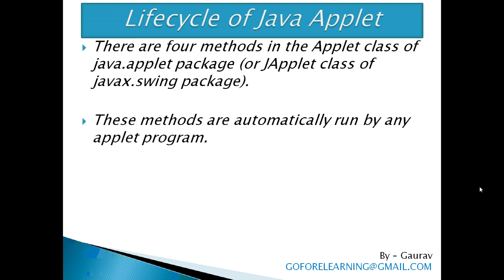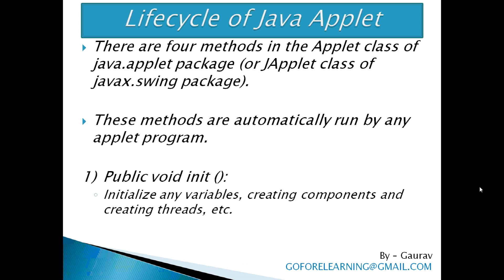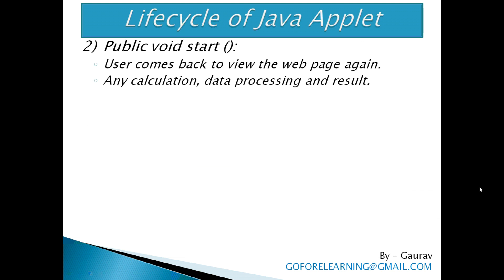There are four methods in the Applet class of the java.applet package or the javax.swing package that give you the framework on which you build an applet. These methods are automatically run by any applet program. The first method is public void init. This method is the first method to be called by the browser and it is executed only once. The programmer can use this method to initialize any variable, create components, and create threads, etc. When this method execution is completed, the browser looks for the next method, which is the start method.